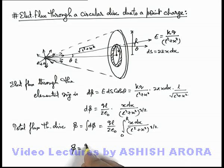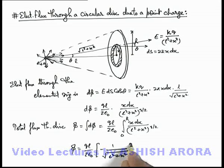This can be written as ql by 2 epsilon not. On integrating this expression we'll get minus 1 by root of (l square plus x square) limits from zero to r. If we substitute the limits or we can reverse the limits due to the negative sign present here.